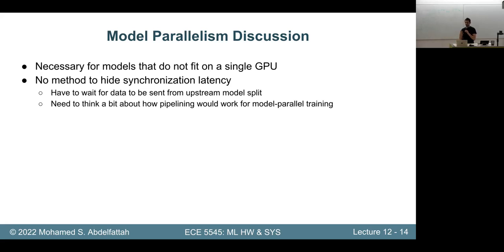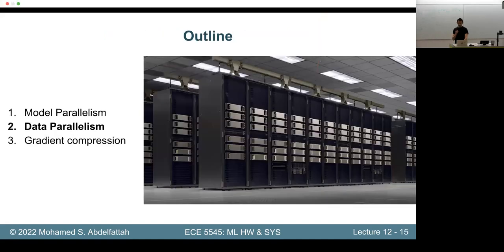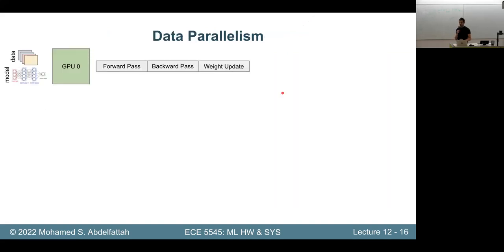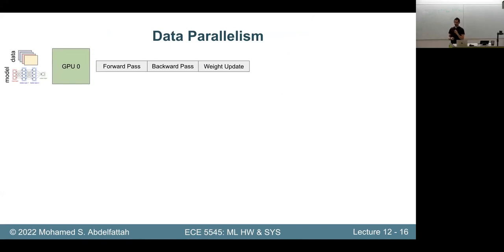That's model parallelism at a high level — you split the model, put it on multiple GPUs, fill those GPU cycles and minimize idle time, and programmatically use .to() commands to move data. Data parallelism is quite important, and usually when a model is large enough to need splitting, you also add data parallelism on top. On a single GPU, you have your data and model together, doing forward pass, backward pass, weight update.